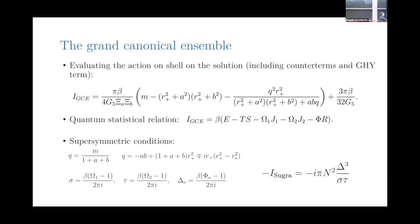If you derive the entropy by a Legendre transform and take the extremal limit, you get the ordinary Bekenstein-Hawking entropy. [Question: Are delta, sigma, and tau complex?] Yes, they will be generally complex on this side. Delta, sigma, and tau are generically complex, but in the extremal limit these factors will become real again and equal to their extremal values.